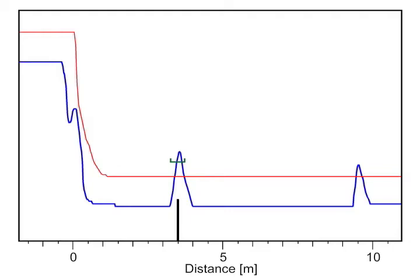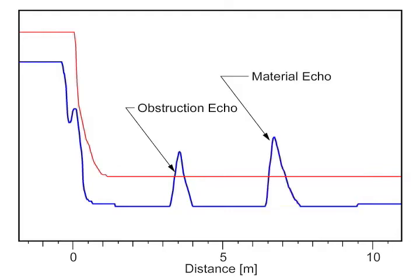How can we eliminate this risk and have the level device ignore the obstruction echo? The answer is Auto-False Echo Suppression. With Auto-False Echo Suppression, we can teach the level measurement device to automatically ignore the obstruction echo. It does this by shaping the TVT curve over the obstruction echo.